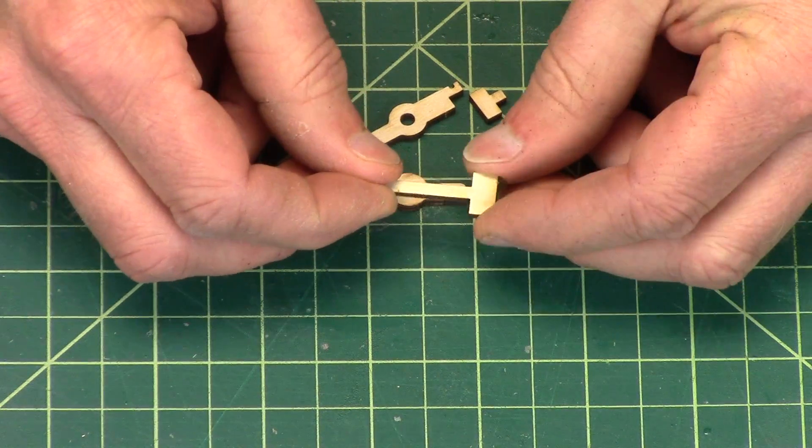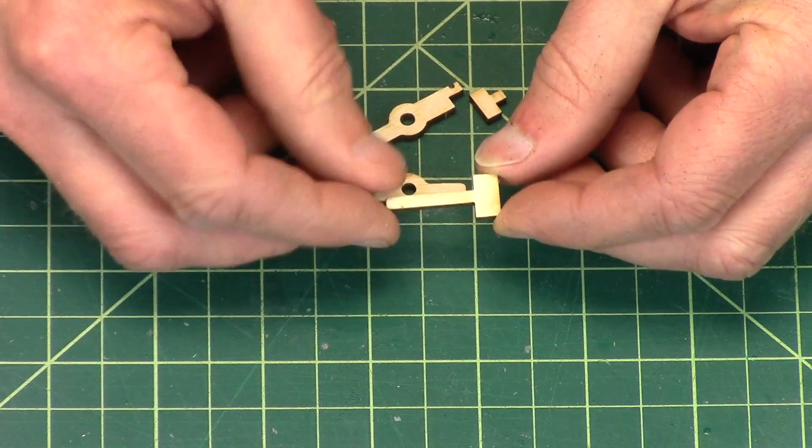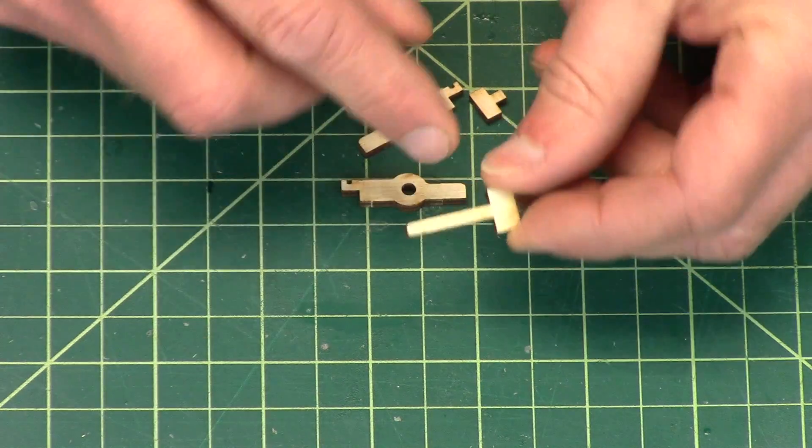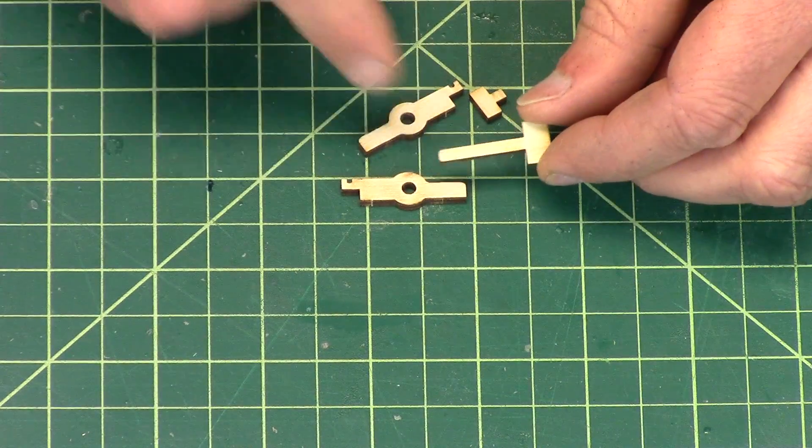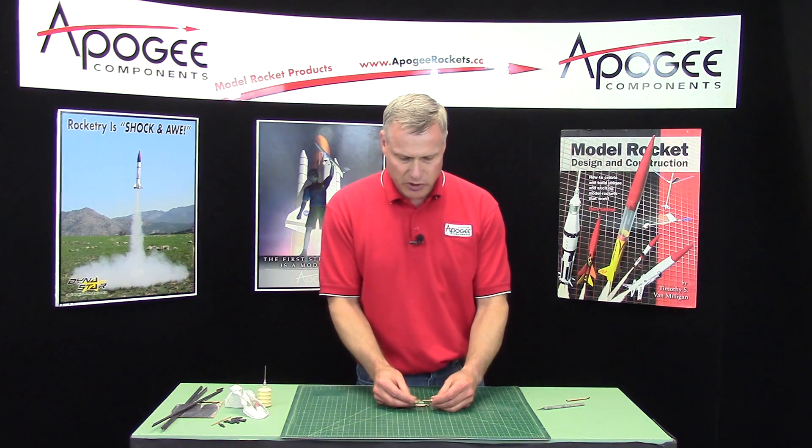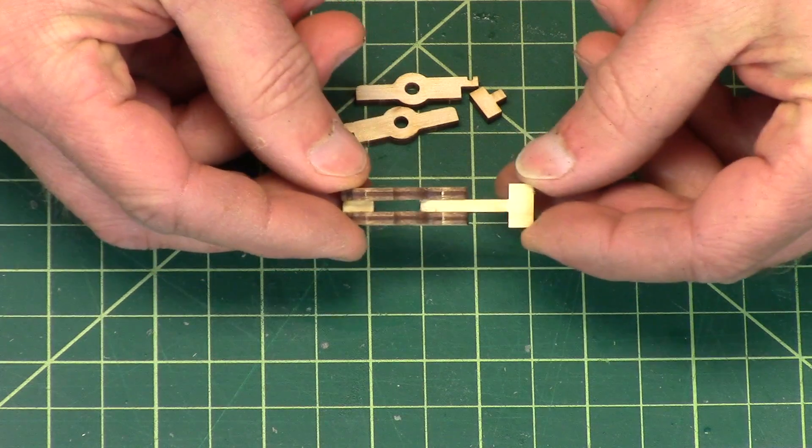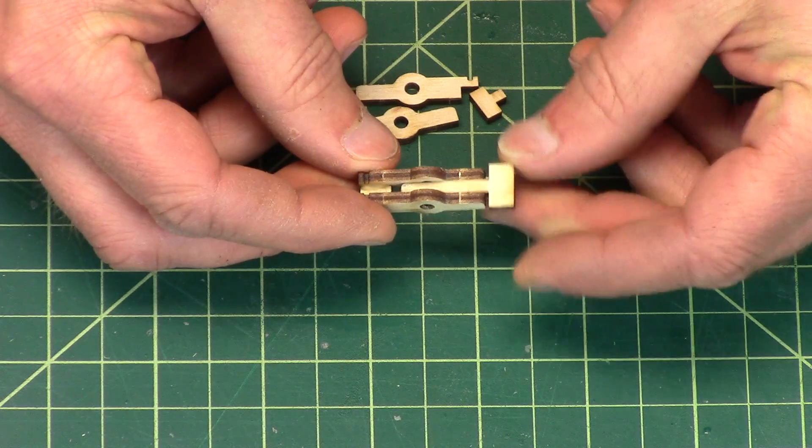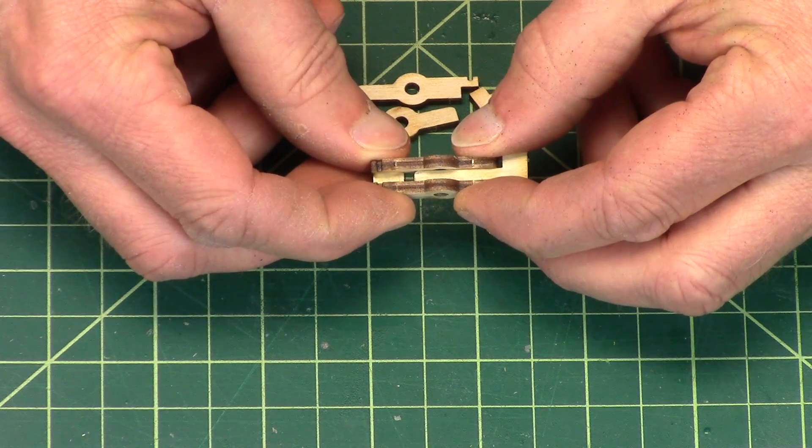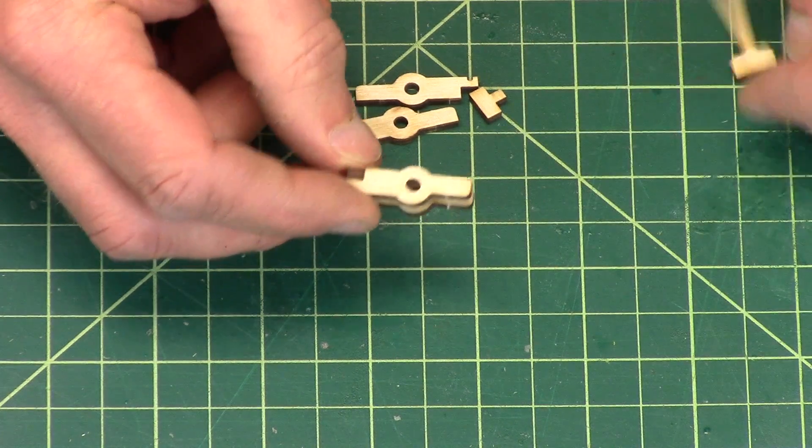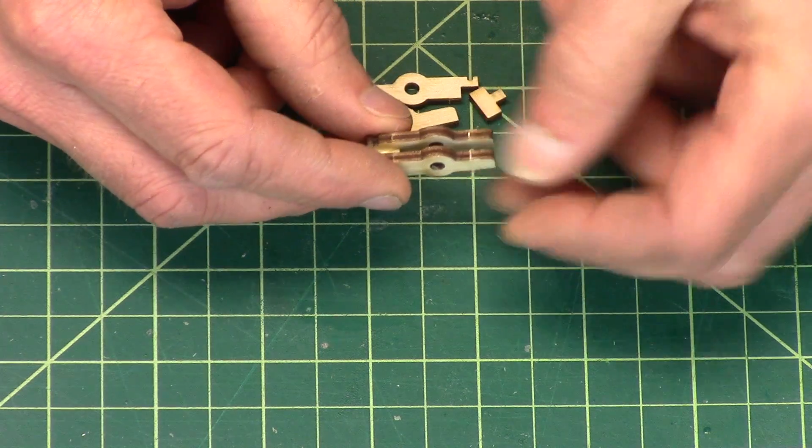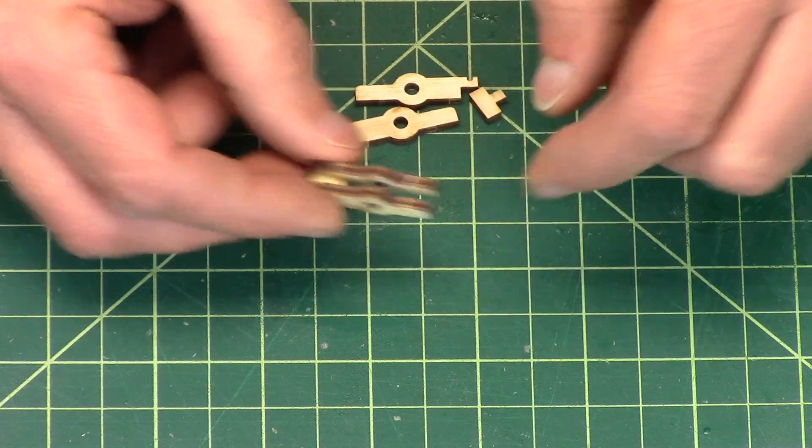And you're also going to need the latch spacer. And that's this long T-looking thing. And again, we're not going to glue this. This is just to get the spacing right between the prongs. And it will slide in there just like that. And it allows us to squeeze everything together and make sure that we get the right thickness. Because that's the thickness of the fin.